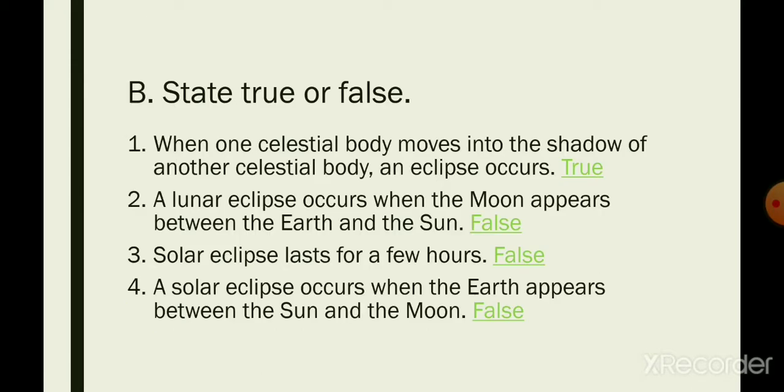Let's move on. B. State true or false. Number one: when one celestial body moves into the shadow of another celestial body, an eclipse occurs. True. Number two: a lunar eclipse occurs when the Moon appears between the Earth and the Sun. False.